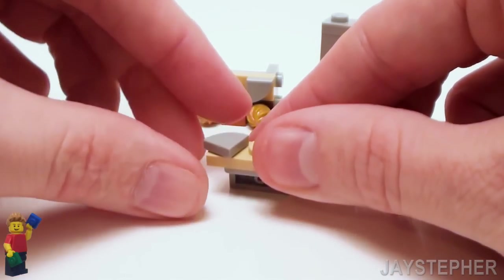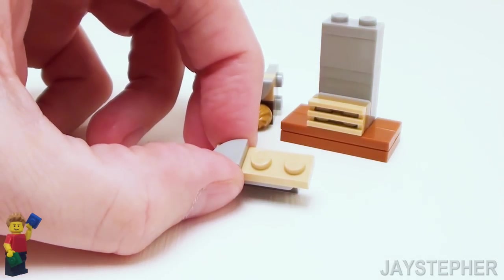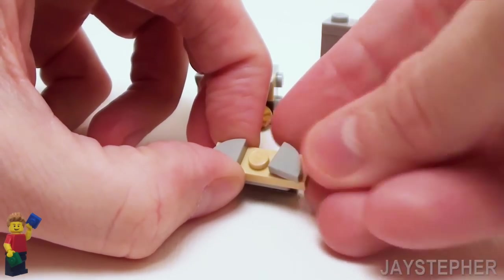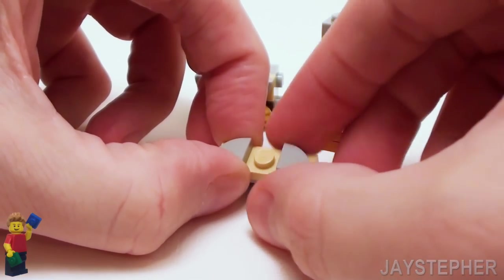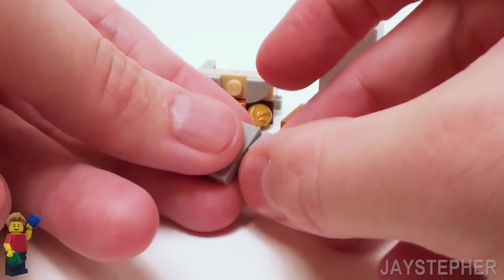Let's place another 1 by 1 quarter round plate on the left, followed by another one on the right. Now place a 1 by 2 flat tile in the center.